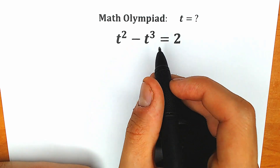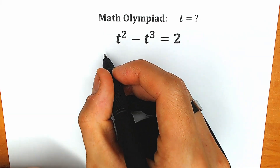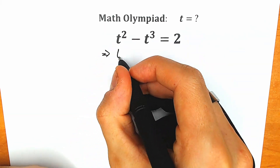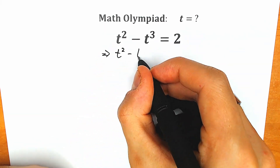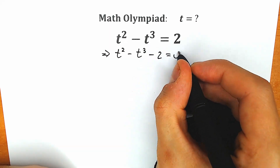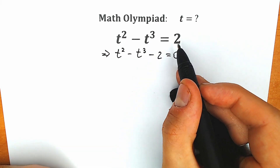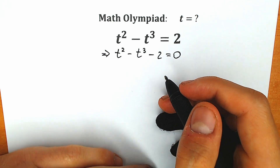So first of all, what I'm going to do — I'm going to subtract 2. So our first step: we have t squared minus t cubed minus 2 equals 0. I really hope you understand this step. We just write these two on the left side, but with a negative sign.